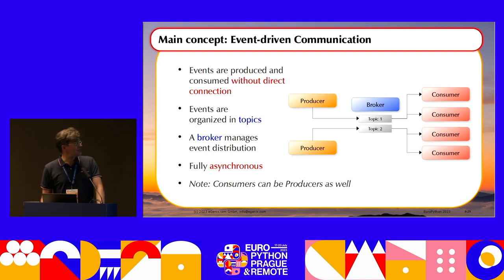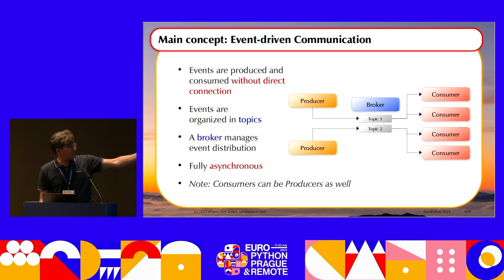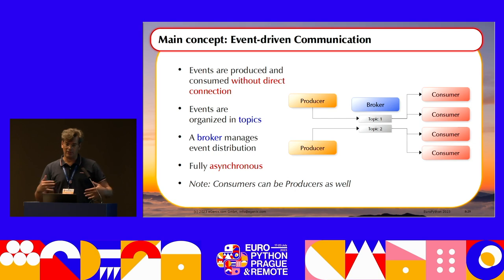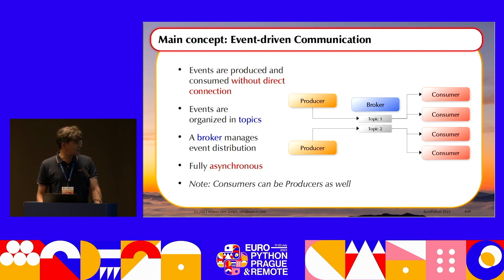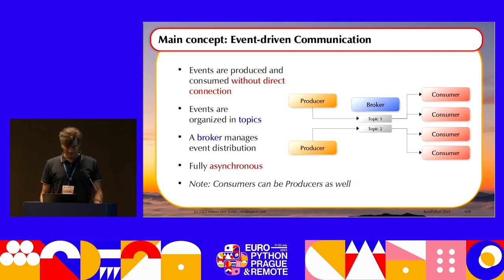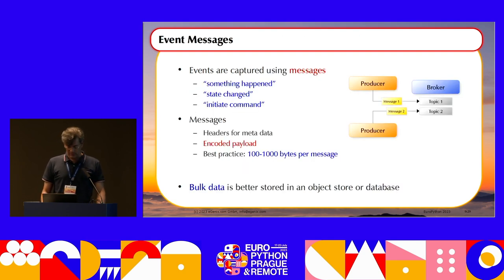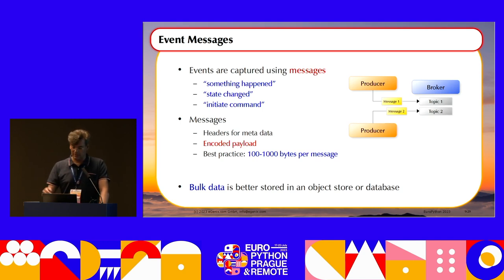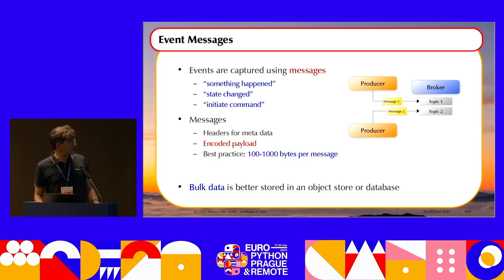This slide shows the main concepts of event-driven architecture. You have producers that produce events and consumers that consume events. You typically have a broker in between to make sure the communication works. There are various ways consumers can listen to events and producers can put events into the system. To make sure everything gets handled properly, you typically organize events into topics. Everything is fully asynchronous — no one is waiting for anyone. Consumers just watch a topic for new events and then process them.